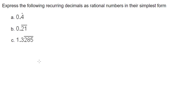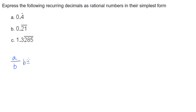In this video I'm looking at expressing recurring decimals as rational numbers in their simplest form. The definition of a rational number is the ratio of two integers, a and b — written as a fraction, as long as b is not zero.